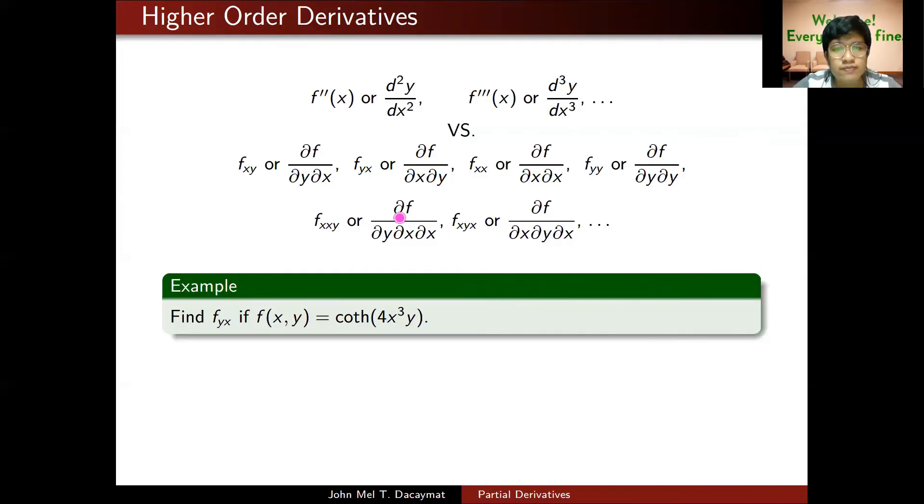For example, I want f sub yx given the hyperbolic cotangent of 4x cubed y as my function. f sub yx, in this definition, is partial f over partial x times partial y. So I'll find the partial with respect to y first of coth(4x³y), then take the partial with respect to x of what I get. Partial with respect to y first: the derivative of coth is negative csch squared times the derivative of the inside. The derivative of 4x³y with respect to y is just 4x³.